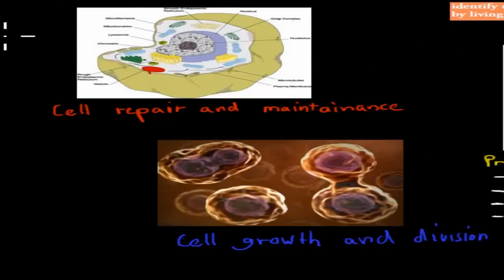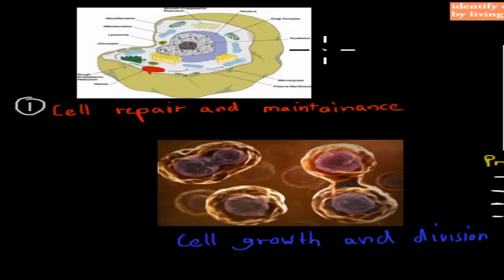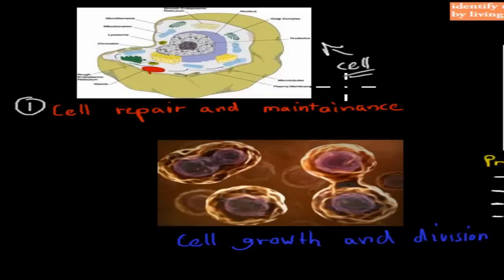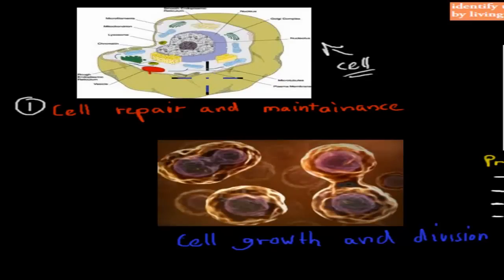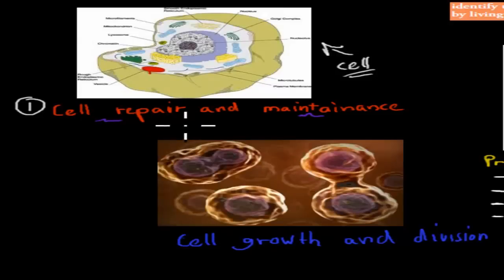There are five main reasons what we need energy for. The first one is cell repair and maintenance. All of our body, and basically any living thing, is made of cells. We need to repair and maintain these cells. You can imagine a cell to be like a house — it has lots of appliances running every day that all require energy, and stuff will break down, so we need energy to repair that as well.